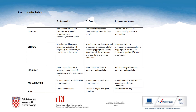To help you with your one-minute talk, here is the evaluation rubric. Pay attention to the assessment criteria: think of content, delivery, language, pronunciation, and time. You can get three points if your talk is outstanding, two if it is good, and one if it needs improvement.